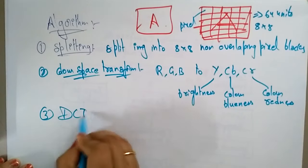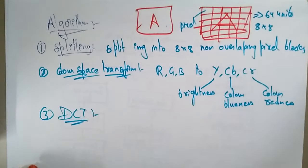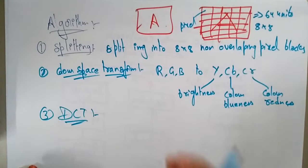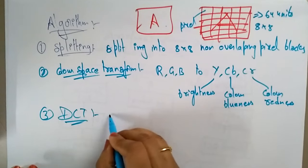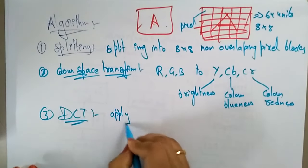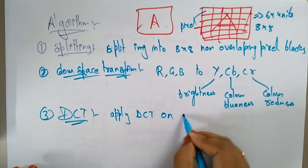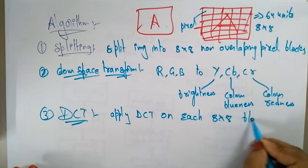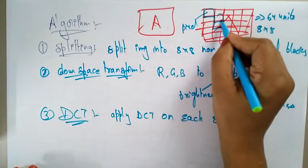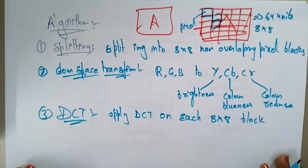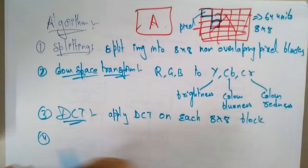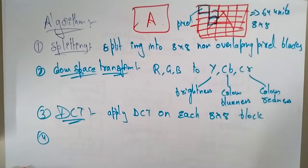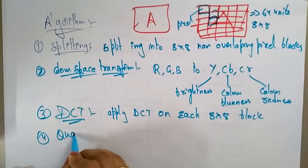The next step is to apply the DCT — Discrete Cosine Transform. You take the Discrete Cosine Transform for each 8 by 8 block. Apply DCT on each 8 by 8 block. After that, according to the schematic, the next step is to apply quantization.